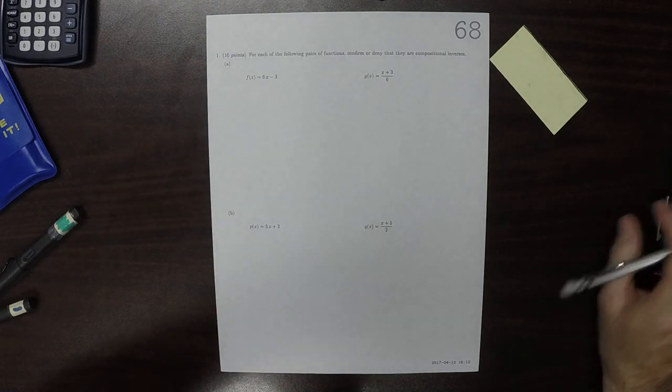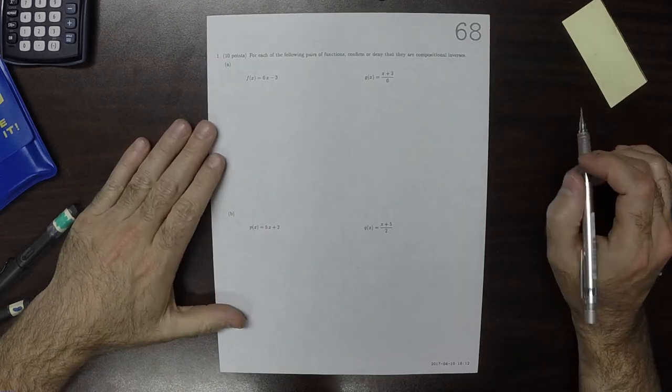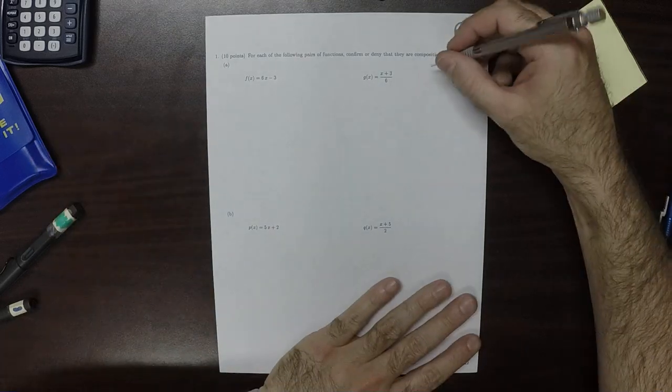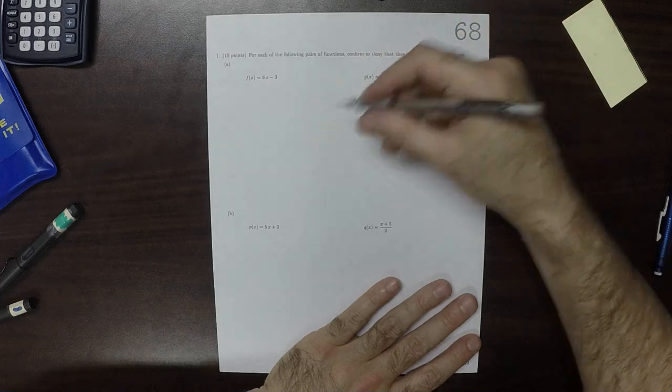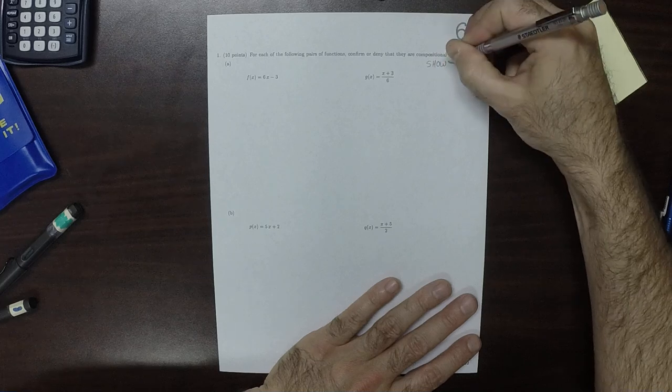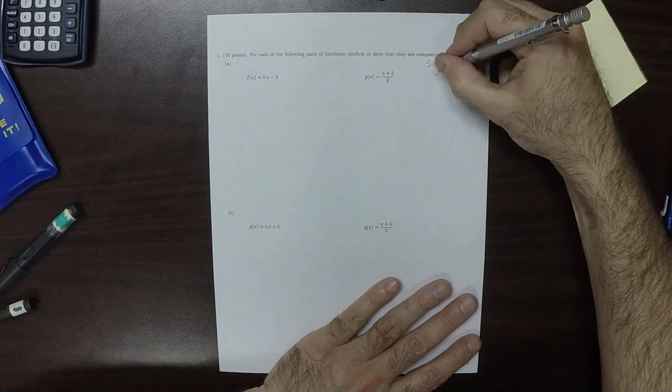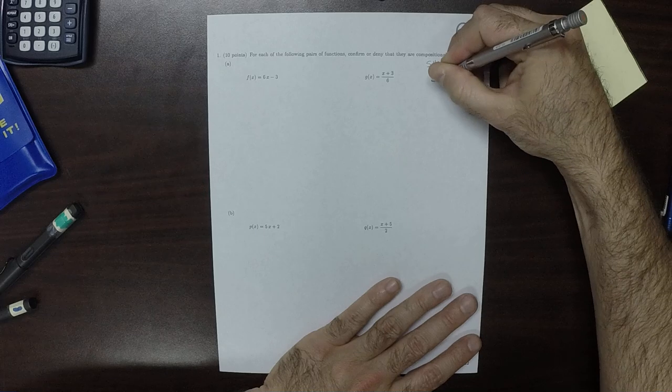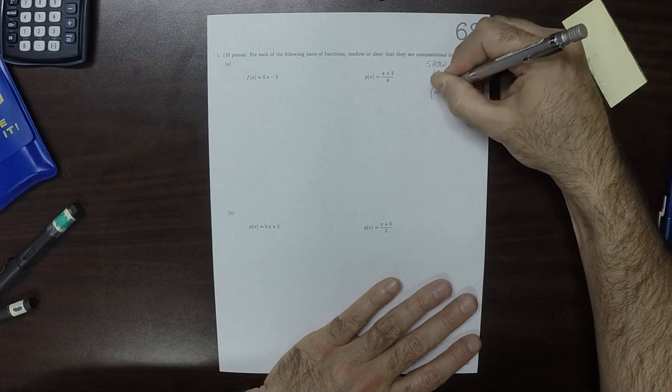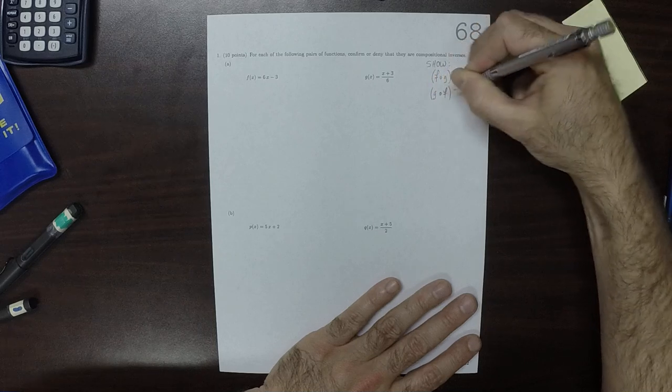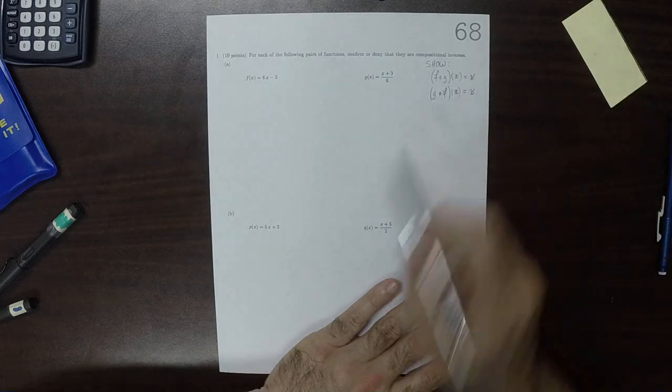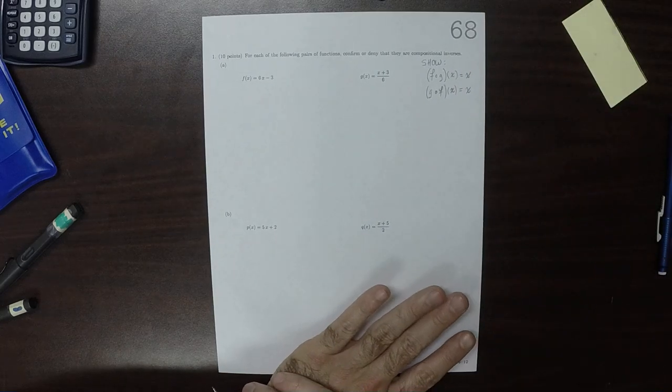This is the solution to Written Homework 68. So to remind you what this question is asking, you need to show that f circ g of x is x and also g circ f at x. So we have to compose them in both orders and show that we get x both times.